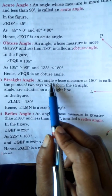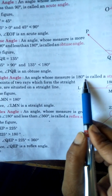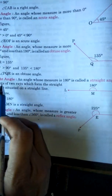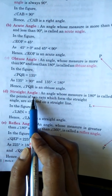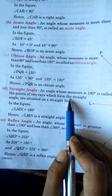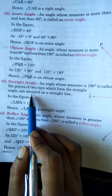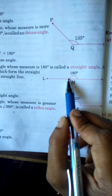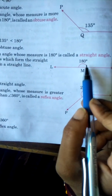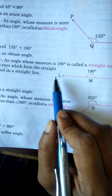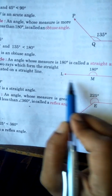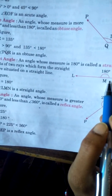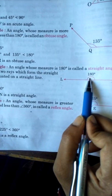Straight angle. An angle whose measure is 180 degrees is called a straight angle. All the points of two rays which form the straight angle are situated on a straight line. Jo angle 180 degree ka hota hai, wo hamesha straight angle hota hai. Yeh hamesha straight line banata hai — straight angle 180 degree ka hota hai.